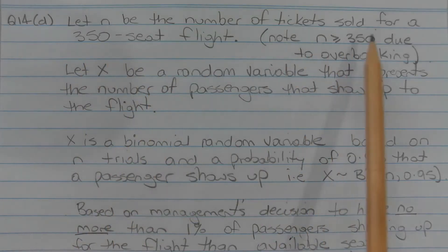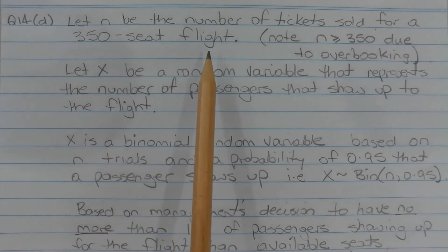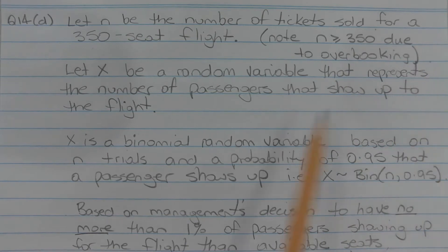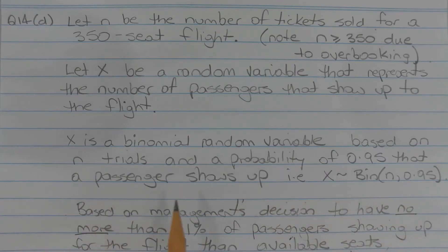Let N be the number of tickets sold for a 350 seat flight. Note that N is greater than or equal to 350 due to overbooking. Let X be a random variable that represents the number of passengers that show up to the flight. X is a binomial random variable based on N trials and a probability of 0.95 that a passenger shows up.